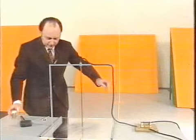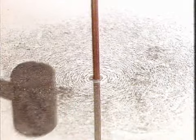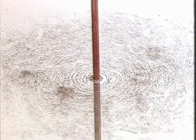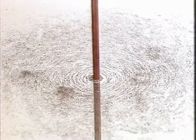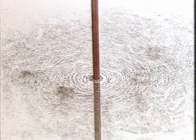Ich schalte nun den Strom ein und zwar so, dass er von oben nach unten durch diesen Draht fließt. Ich klopfe diese Platte etwas. Und wir sehen recht schön, dass sich dieses Eisenpulver zu Ketten anordnet.